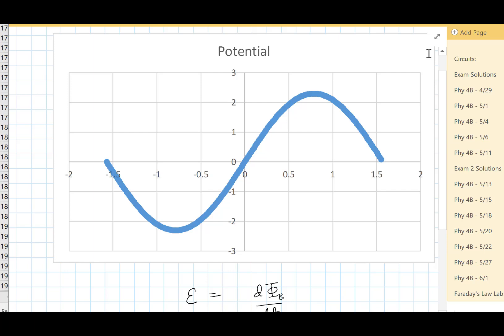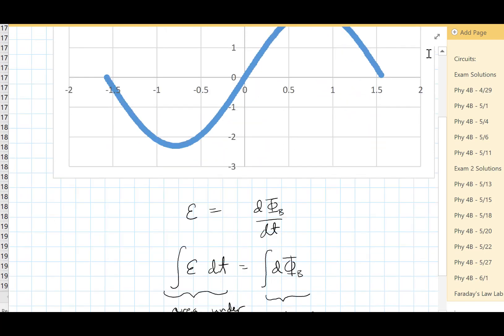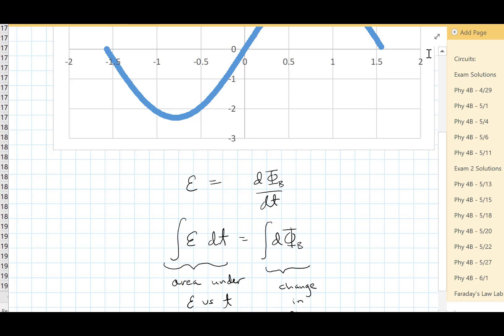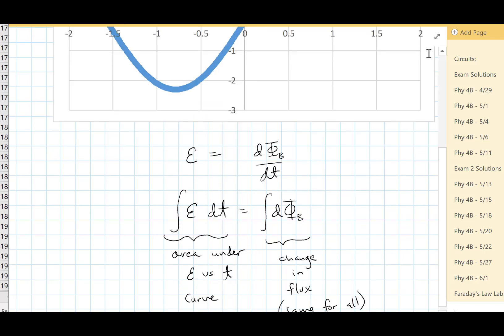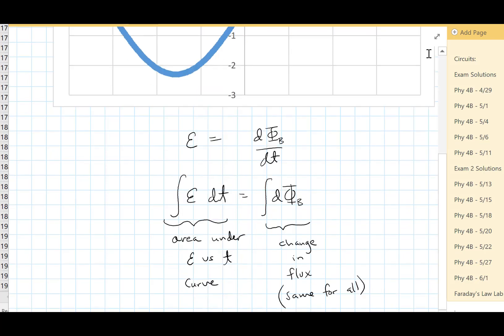What do you get when you integrate the EMF dt? Well, here I have a graph of the potential versus time. If I integrate the potential dt, I get the area under this curve. So the left side of the equation is just the area under the potential versus time curve. The right side of the equation gives us the change in flux.